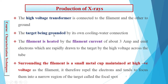The high voltage transformer is connected to the filament and the other end to the ground, with the target grounded by its own cooling water connection. The filament is heated by a filament current of about 3 amperes and emits electrons which are rapidly drawn to the target by the high voltage across the tube. The filament is at very high negative potential while the anode is at very high positive potential, so electrons accelerate toward the target. The focusing cup surrounding the filament is maintained at a high negative voltage to repel and focus electrons into a narrow region of the target called the focal point.